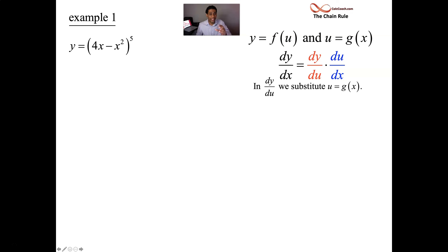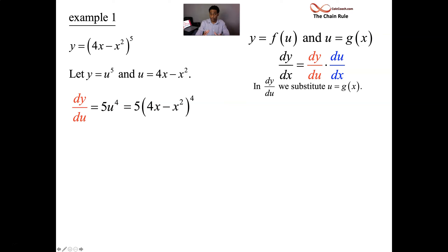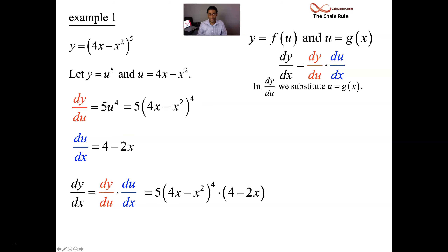The inside function is u, and the outside function is u raised to the fifth. Let's take dy/du and du/dx. dy/du is 5u to the fourth. We can replace the u with g of x, so that becomes 5 times g to the fourth. And then du/dx is just 4 minus 2x. The derivative is the product of these two: 5 times the function to the fourth, times the derivative of the function.